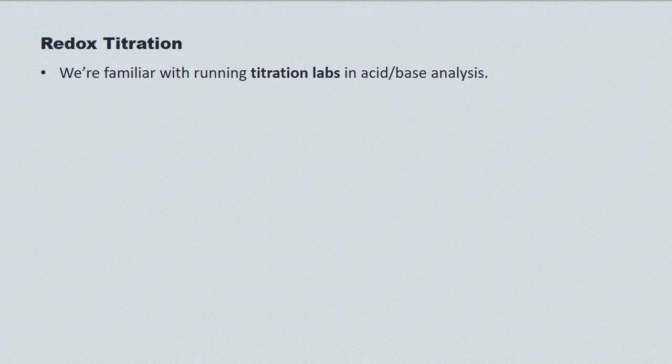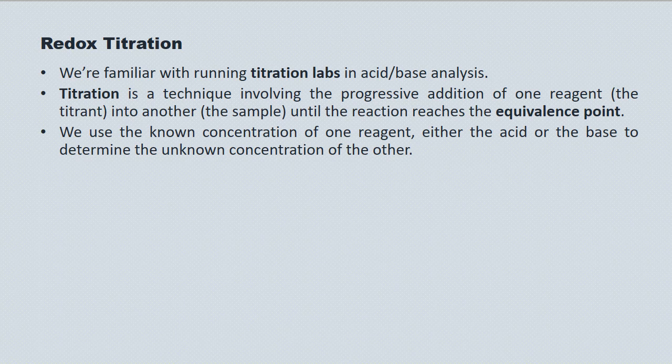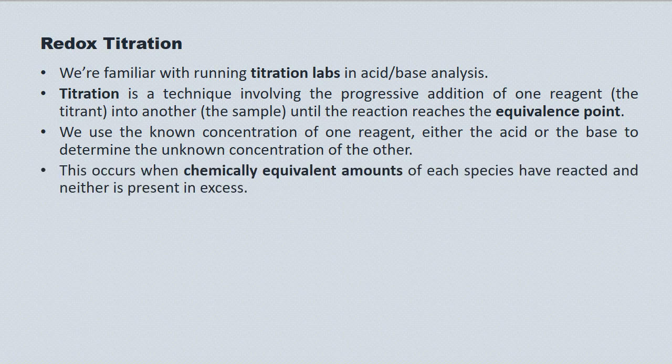We should be familiar with titration labs from acid-base analysis in grade 11. Titration is a technique involving the progressive addition of one reagent, which we call the titrant, to another, referred to as the sample, until the system reaches the equivalence point. We use the known concentration of one reagent, either the acid or the base, to determine the unknown concentration of the other. This occurs when chemically equivalent amounts of each species have reacted, and neither is present in excess.